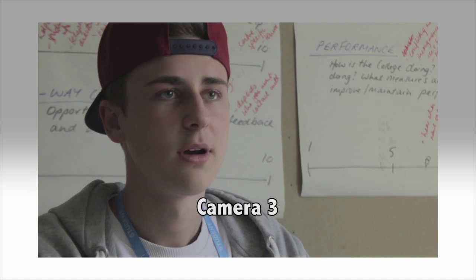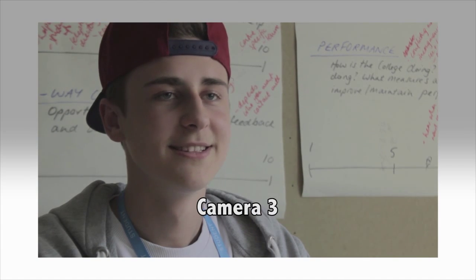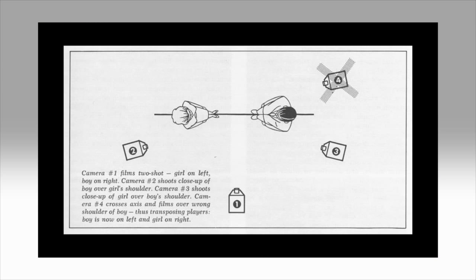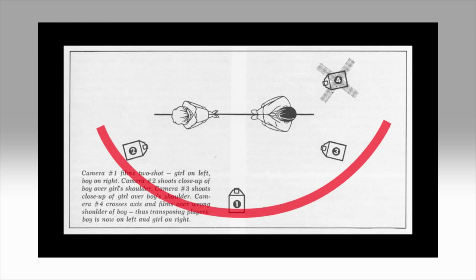The 180 degree rule works in conjunction with the line of action. If you imagine a semicircle — which, if you remember from maths at school, is 180 degrees — you can place cameras two and three anywhere in this imaginary semicircle. However, it's important for good graphic stability between the edits that when